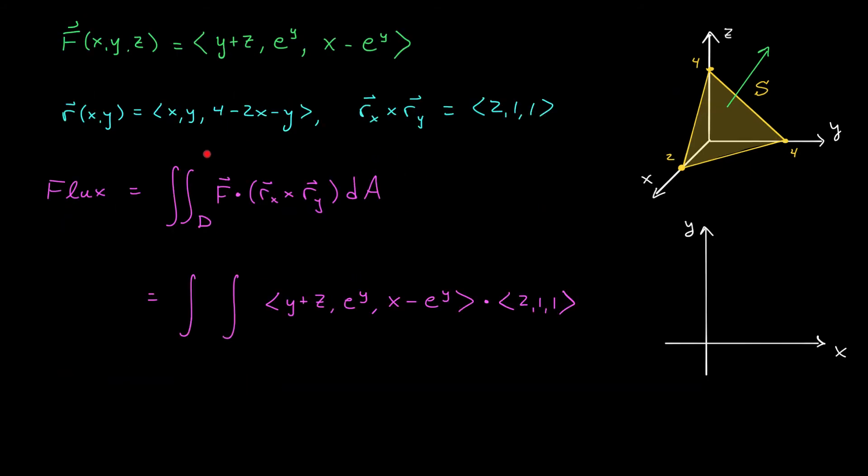OK, we need to set up and evaluate this double integral. I've included our vector field F that was given to us at the start of the problem, as well as our cross product r_x cross r_y, the vector 2, 1, 1. We still need to find the bounds on these double integrals, though. And so we have to look at the region D, the set of all possible values of x and y over our surface S. Well, if we're looking at x and y, we're really looking at this triangle in the xy plane. And I'll draw that triangle for you here. We see that x is 2, y is 4, and this is our region D.